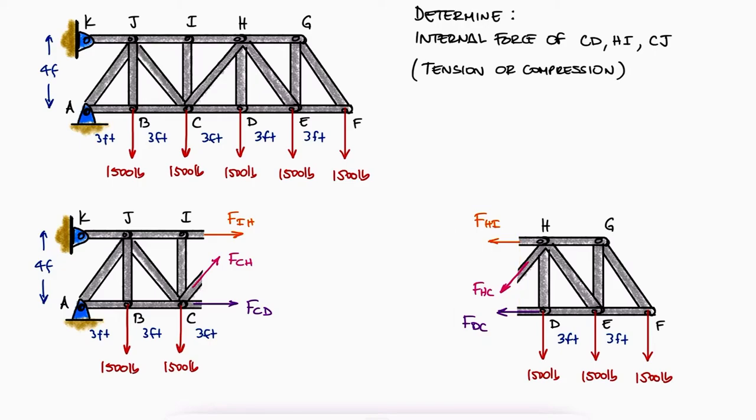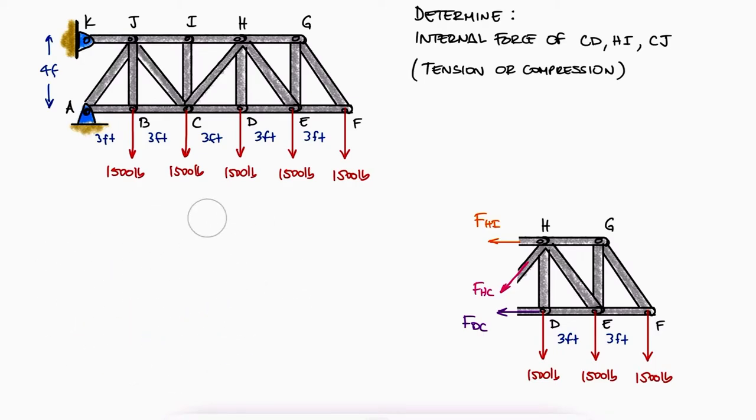As opposed to the method of joints, in the method of sections we can write a sum of moments to solve for one or more of those variables. So we'll use the structure at the right.